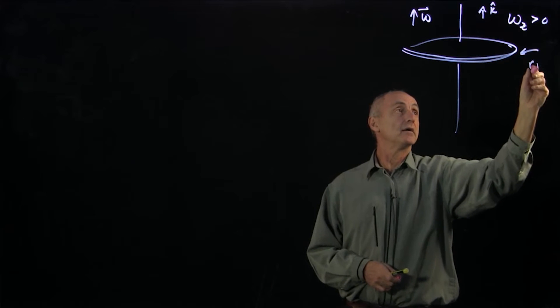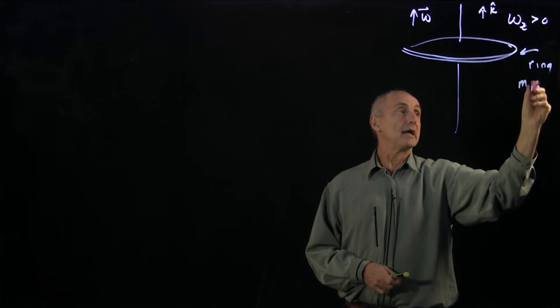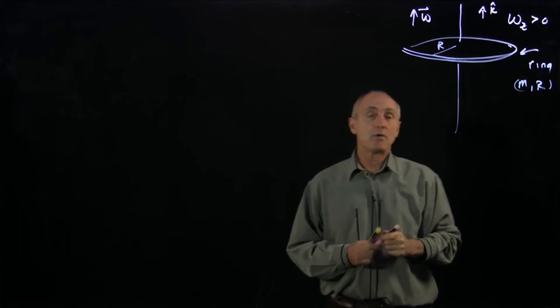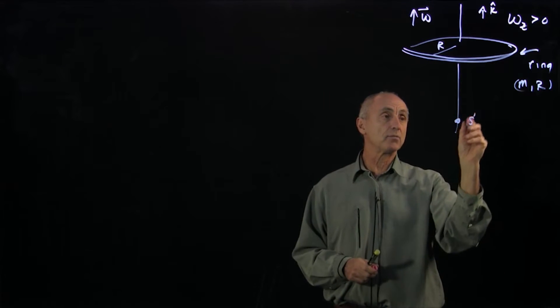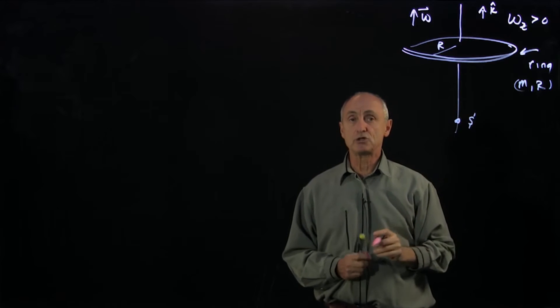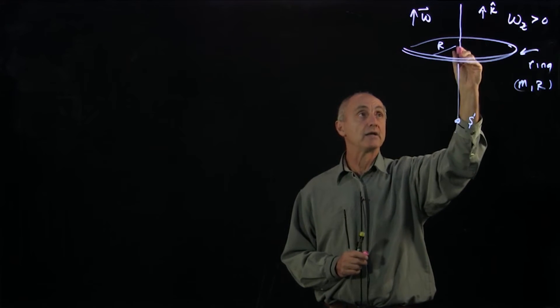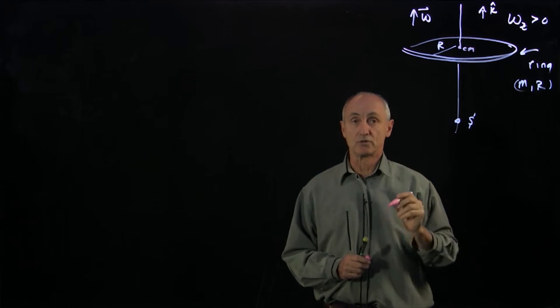And this is a ring of mass m and radius r. So here's our radius. And we're going to choose a point that lies somewhere on the symmetry axis of the ring. And the object is rotating about that symmetry axis, so it's passing through the center of mass.